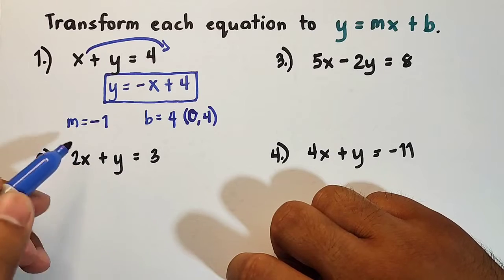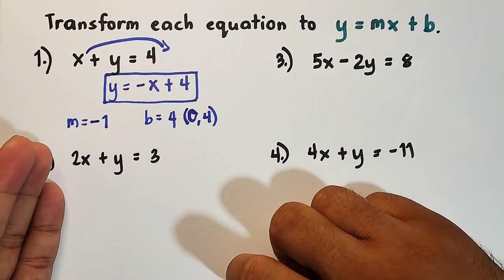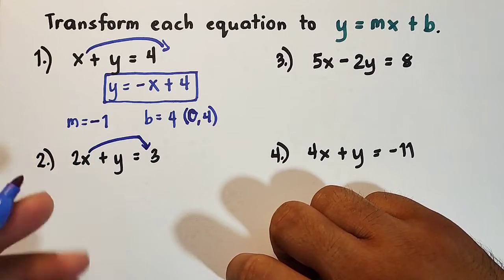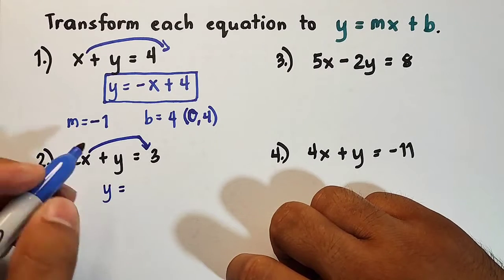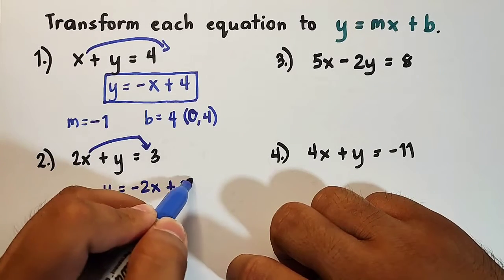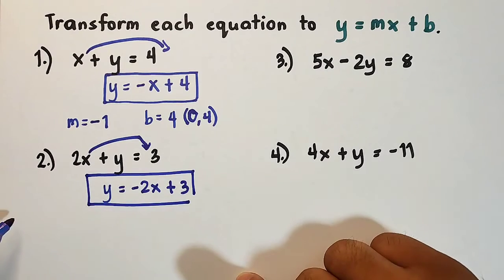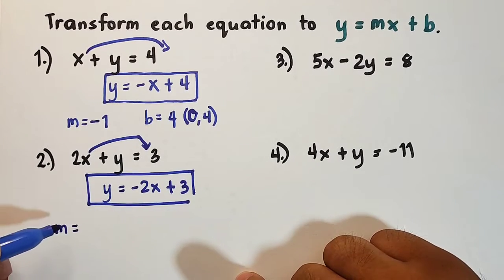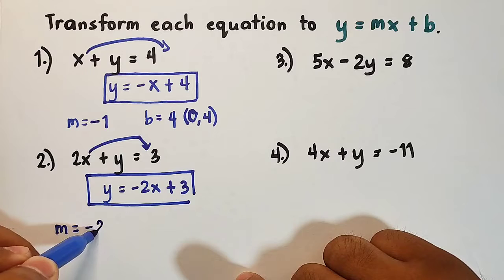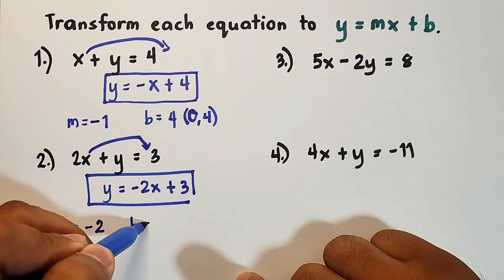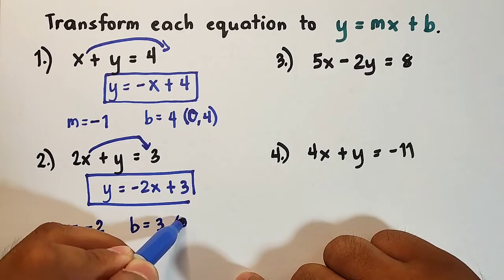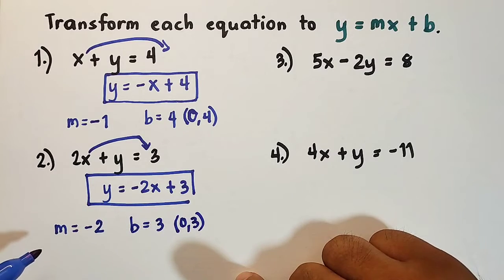For equation two, 2x plus y is equal to 3, we need to eliminate 2x on the left side. Transposing 2x gives us y is equal to negative 2x plus 3. This is the slope-intercept form. The slope m is the coefficient of x, which is negative 2, and the y-intercept is 3, or in coordinate form (0, 3).